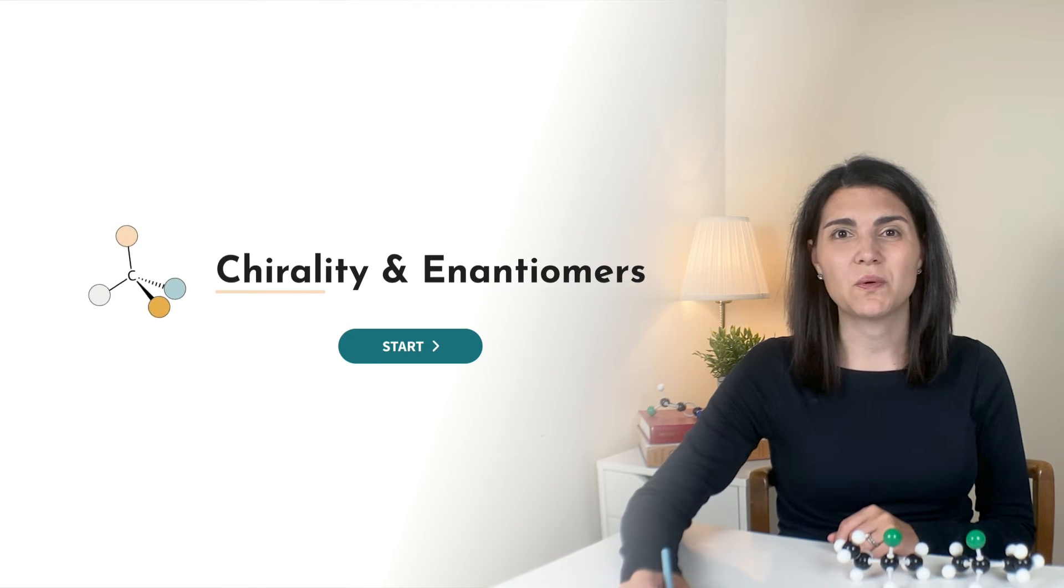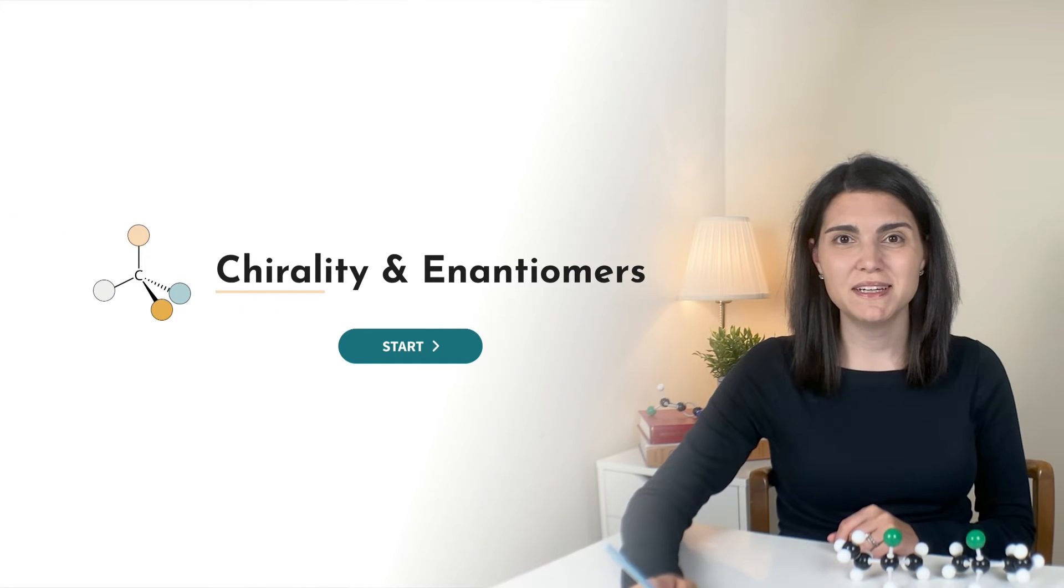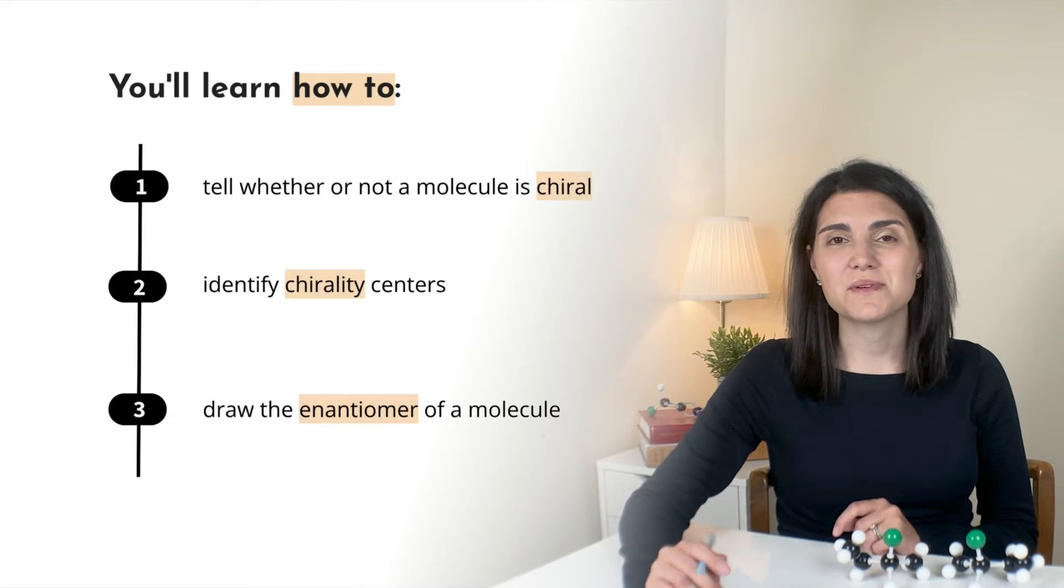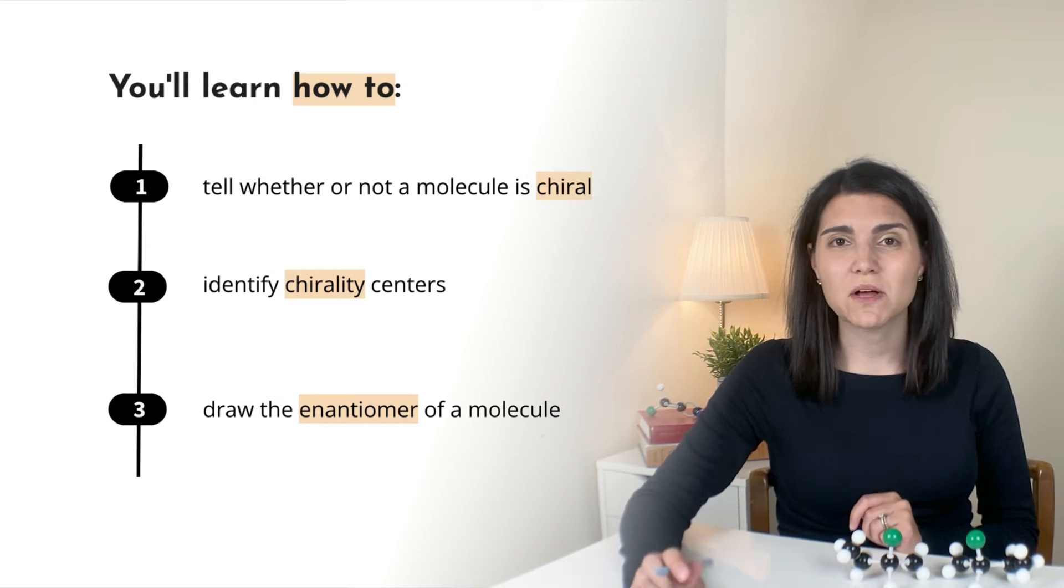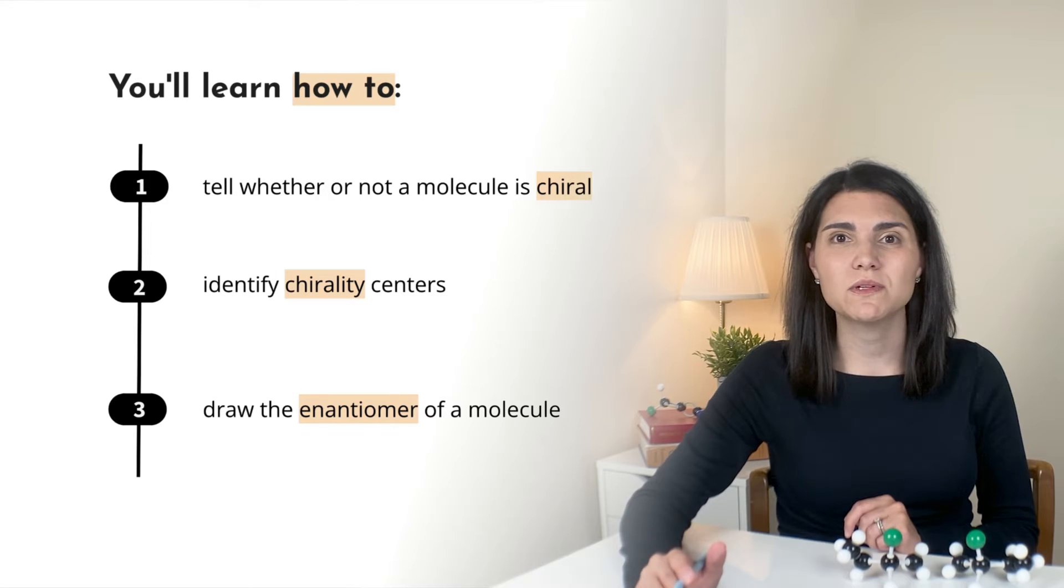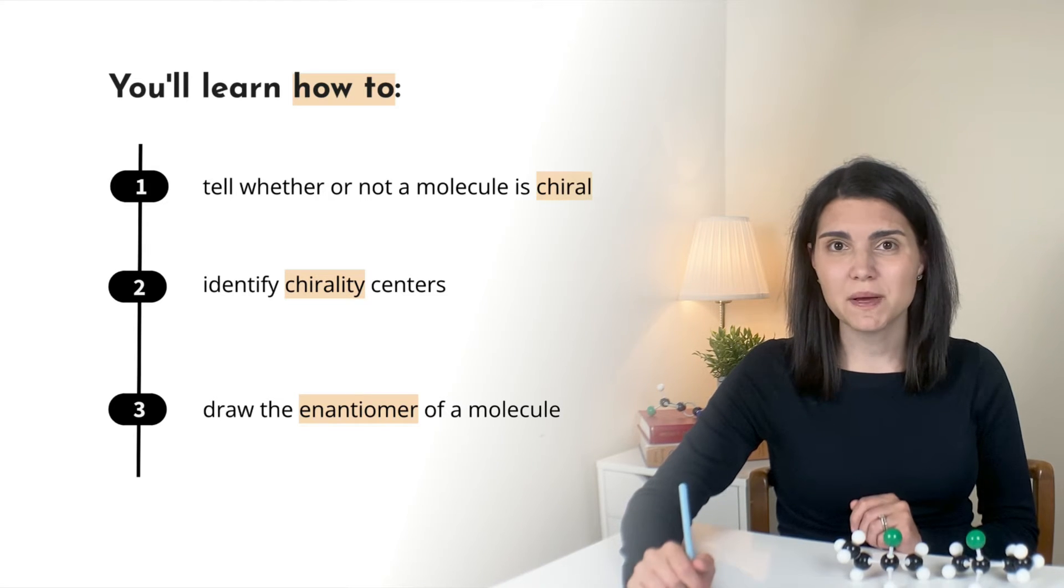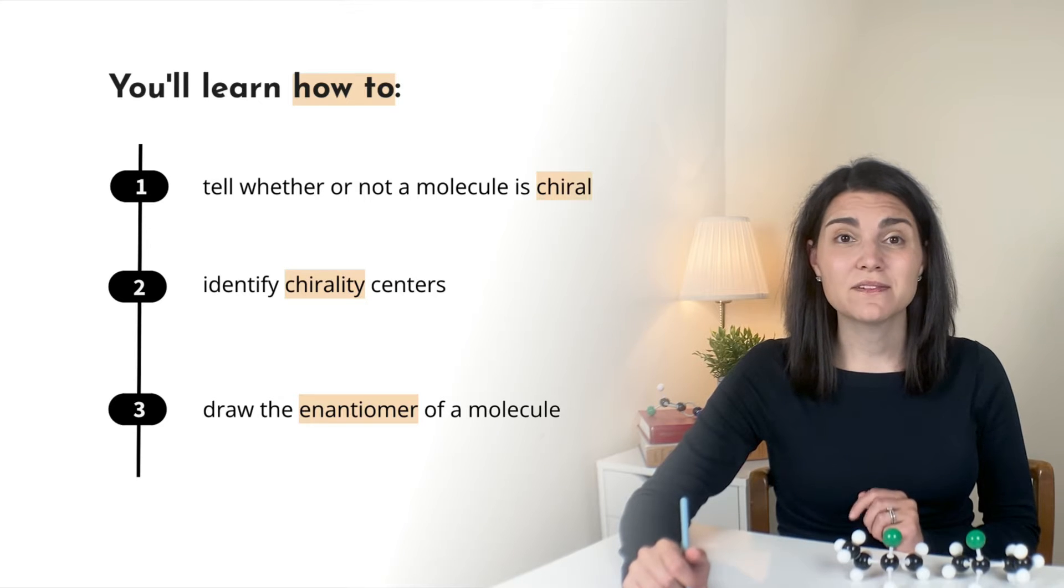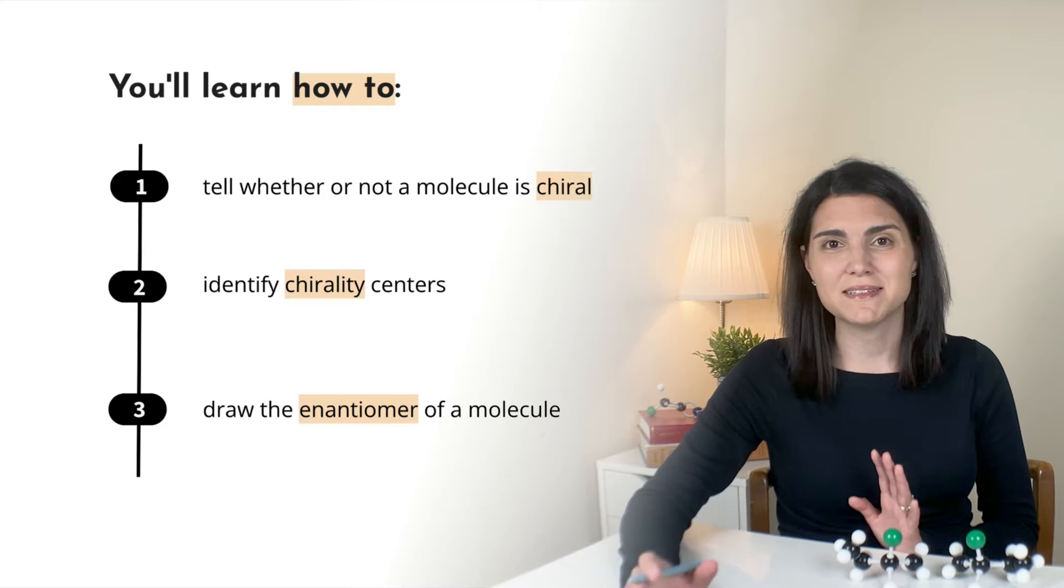In this organic chemistry tutorial we're going to talk about chirality and enantiomers. By the end of this lesson you're going to learn three key skills. You're going to be able to tell right away whether a molecule is chiral or achiral, you're going to be able to quickly identify chirality centers on a molecule, and finally if given a chiral molecule you're going to be able to draw the enantiomer really easily.